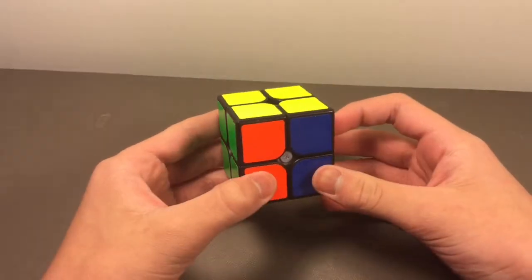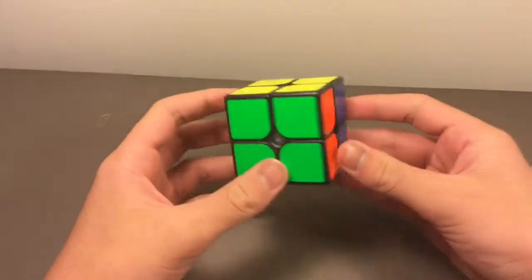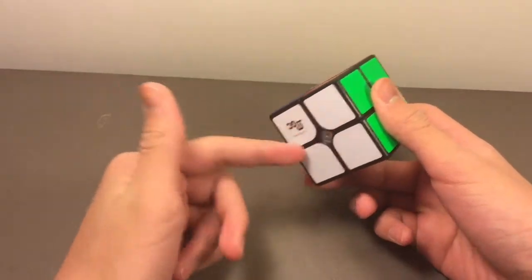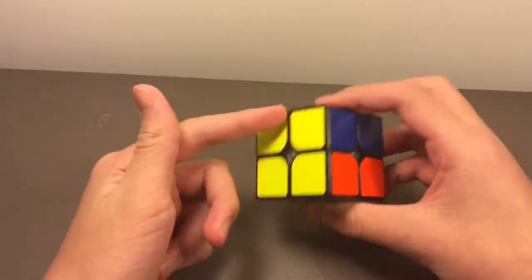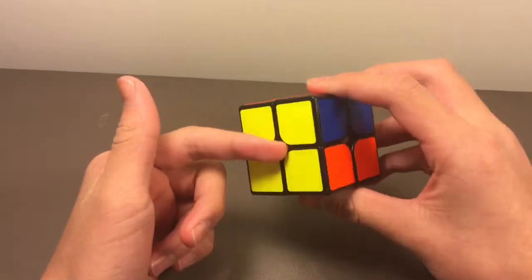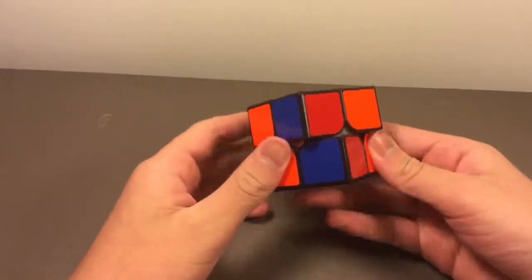PBL stands for permutation of both layers. So in Ortega, once you finish the first side and the side opposite to that side, you will get something that looks like this.